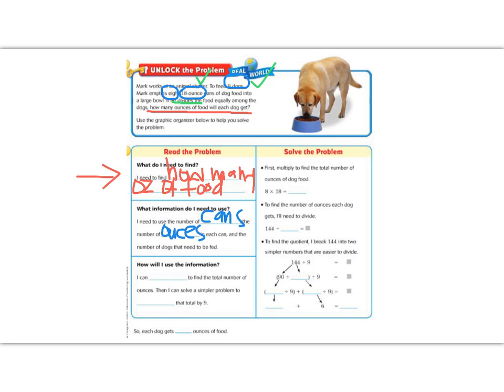Our next box says, how will I use this information? So we can multiply to find the total number of ounces. Remember, when we very first started this, we said that we would have to take the eight and the 18 and multiply them together to see how much there was total. So our first line is, I can multiply.